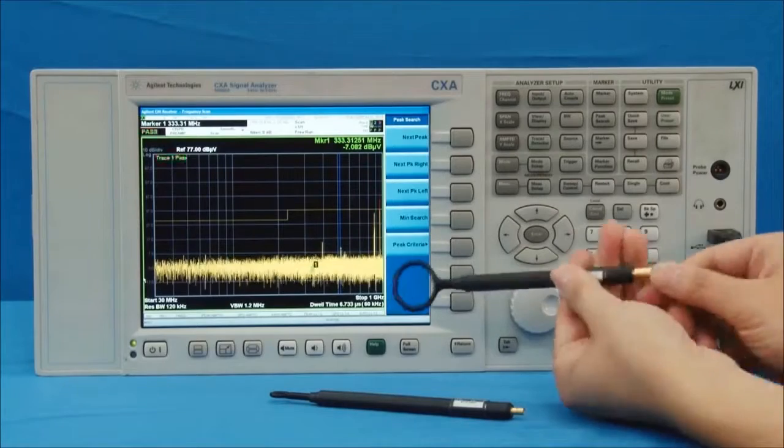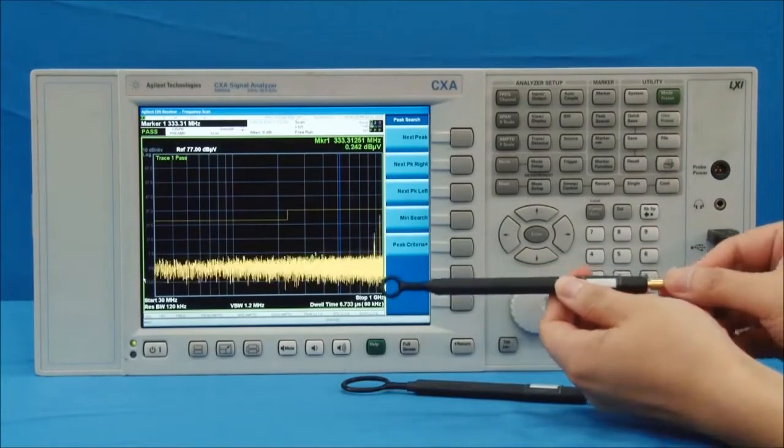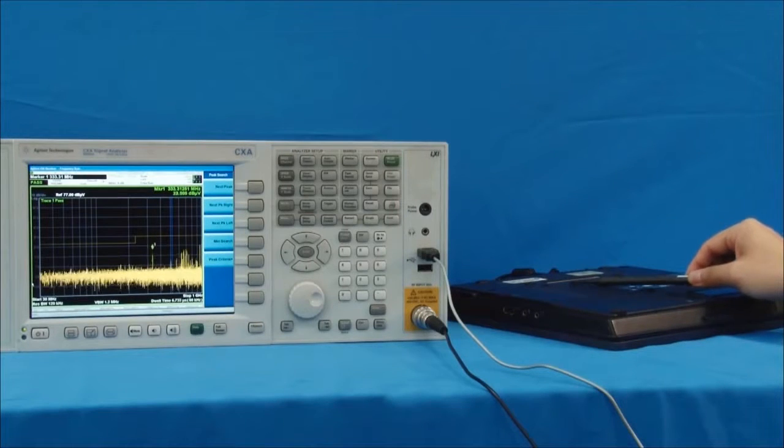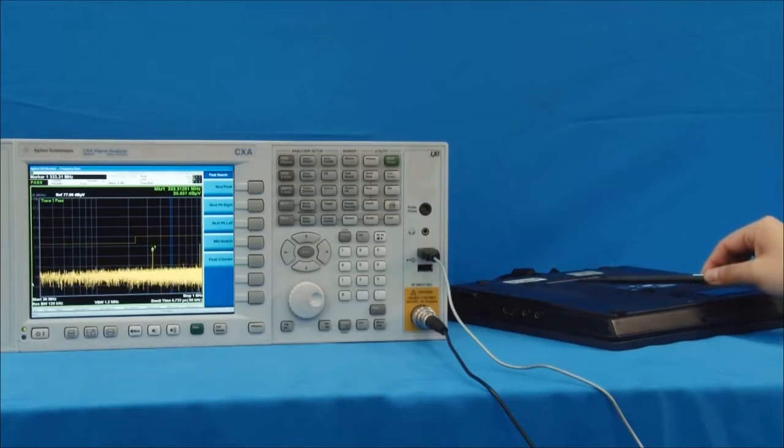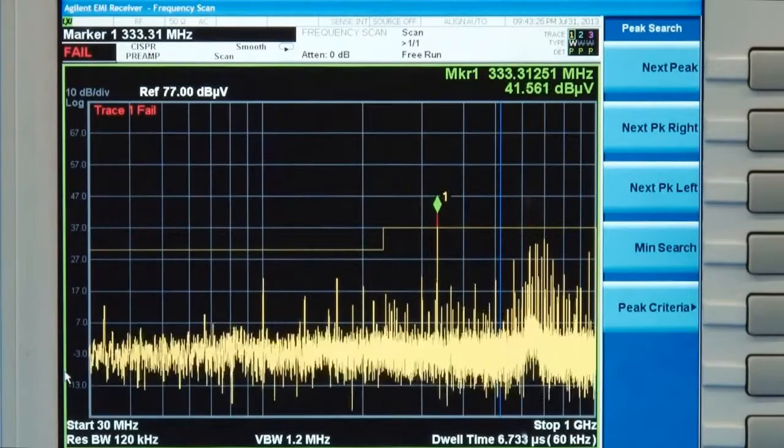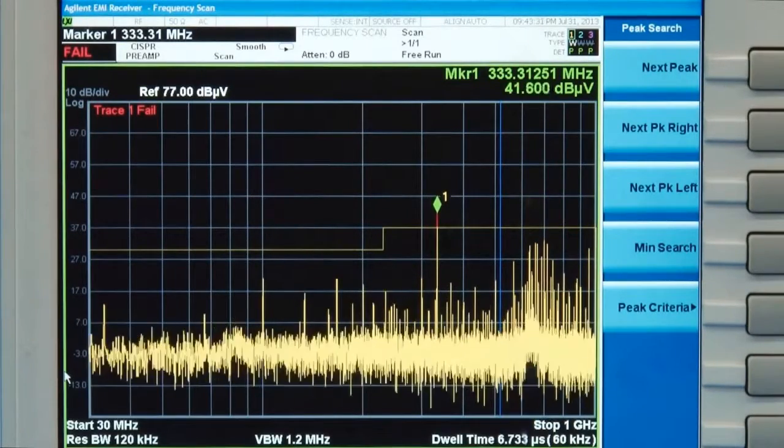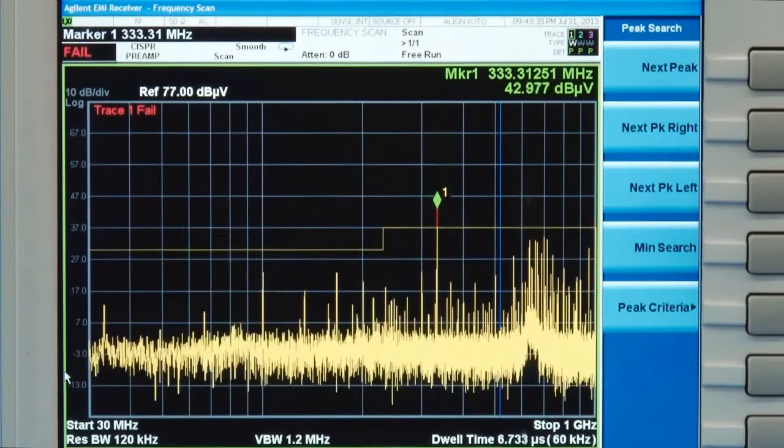Now, we change the probe to probe number 2, which has better resolution. By moving the probe around on the DUT, we can narrow the test range. In this case, the highest level of 333 MHz signal is lower than what we observe by using probe number 1. However, we get better resolution to locate the source of emission.